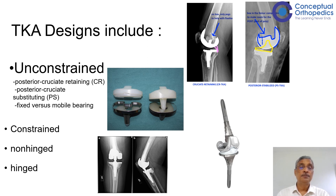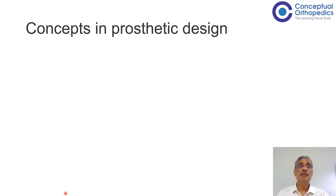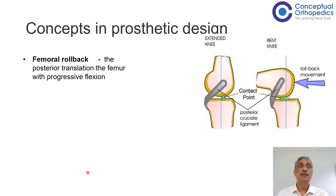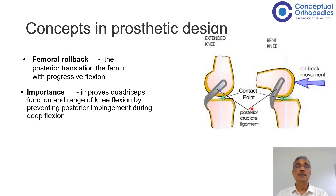Coming to the concepts in prosthetic design, we have what is called femoral rollback, which is the normal posterior translation of the femur on deep flexion. The point of contact is anterior, and as the knee flexes it goes much further back. This is one crucial design concept that has to be incorporated into all components available in the market. The rollback improves quadriceps function and the range of movement by preventing posterior impingement of the femur on the back of the tibial plateau.